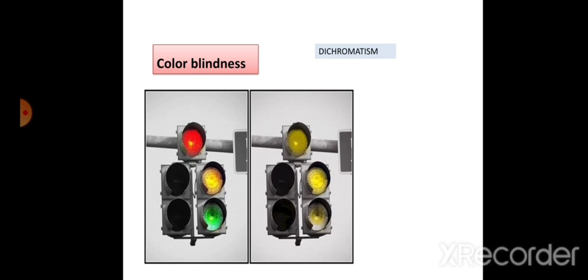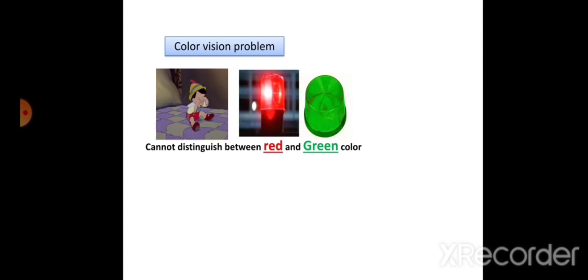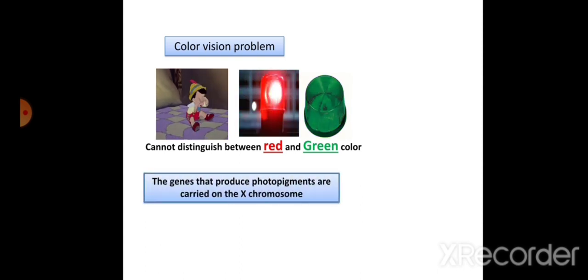Color blindness is the inability to identify or differentiate certain colors. The most commonly observed form is dichromatism — 'di' meaning two, 'chromatism' meaning color — where the person cannot differentiate two colors. The classic example involves a traffic signal: the person cannot distinguish between red and green, and instead perceives a grayish color.